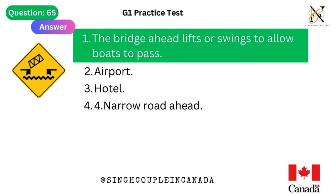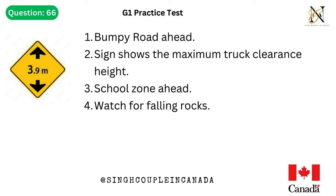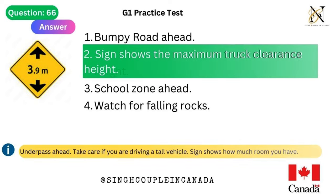Question 66. This traffic sign means: 1. Bumpy road ahead. 2. Sign shows the maximum truck clearance height. 3. School zone ahead. 4. Watch for falling rocks. Answer is 2. Sign shows the maximum truck clearance height — underpass ahead. Take care if you are driving a tall vehicle; the sign shows how much room you have.